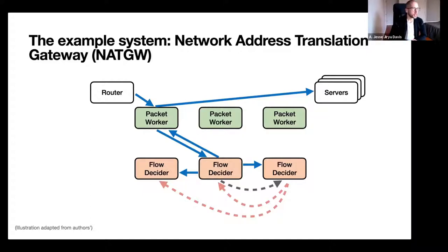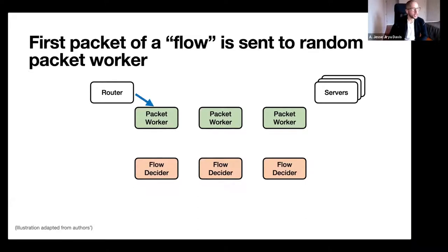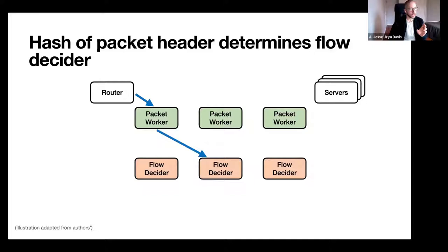The system they want to verify is a distributed network address translation gateway. A client makes a connection to the router, and the first packet of a flow, basically a new connection or maybe a new UDP stream, the router sends it to a random packet worker. The packet worker hashes the packet header - source and destination IP address and port and protocol numbers. These five things together are the IP header and are also called a five tuple. The packet worker hashes those five things and comes up with which flow decider worker should be responsible for this.